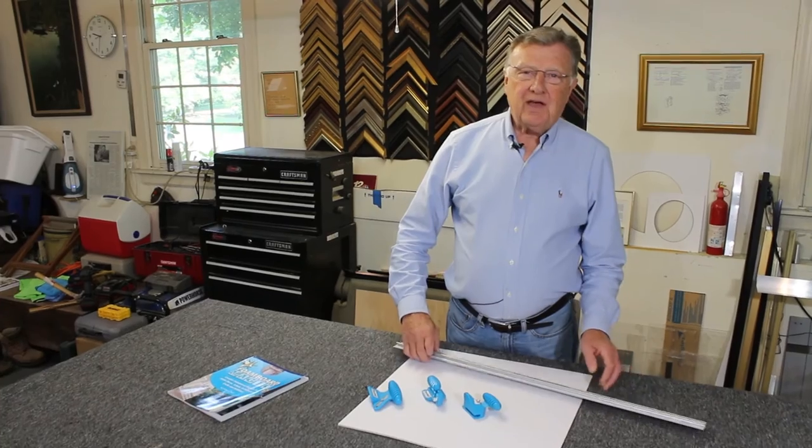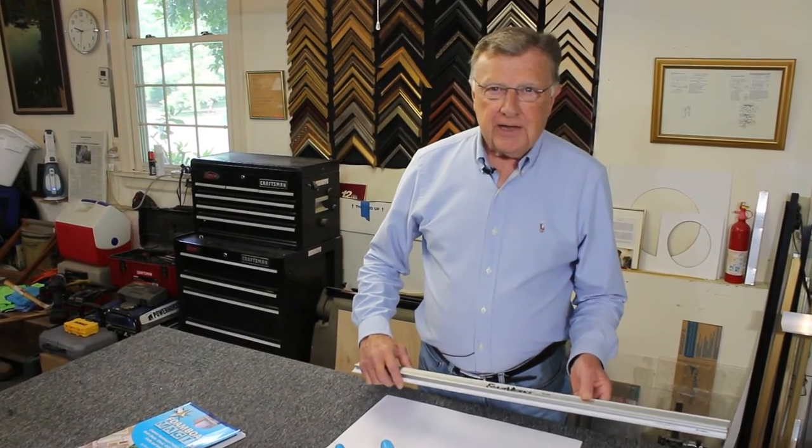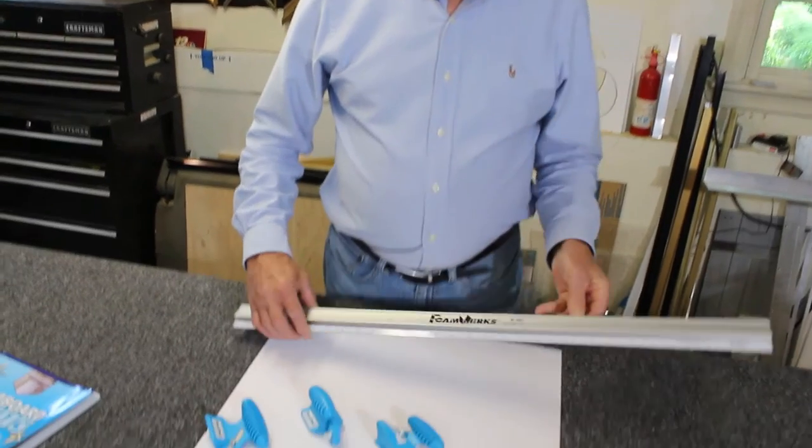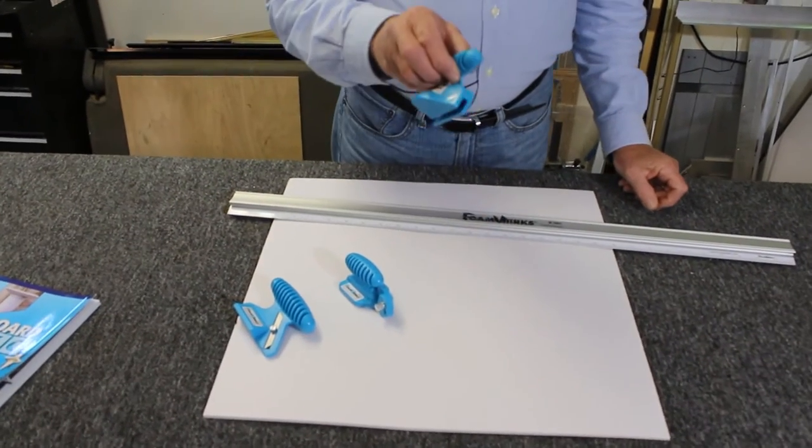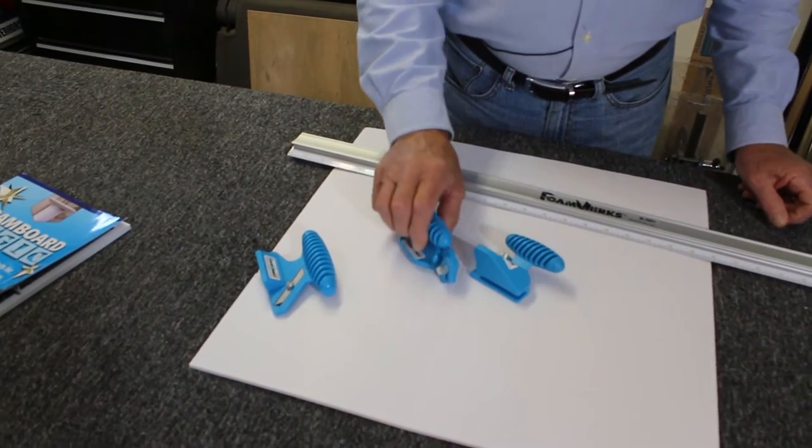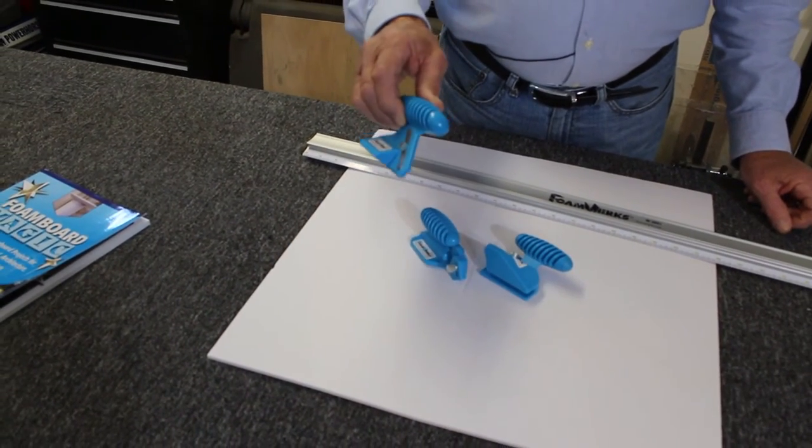This is the W1001 Foamworks Cutting Kit. It includes a 32 inch channel rail, a rabbit cutter, a freestyle cutter, and a straight bevel cutter.